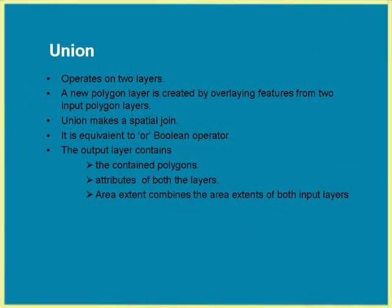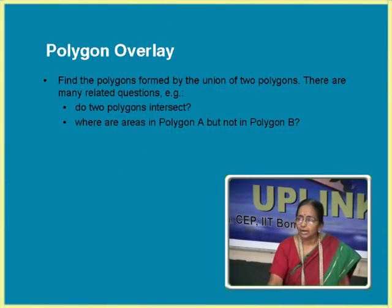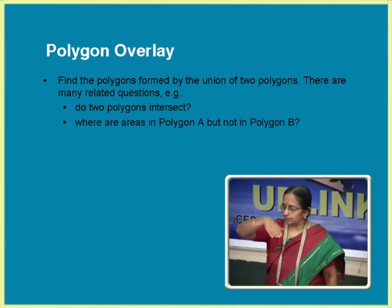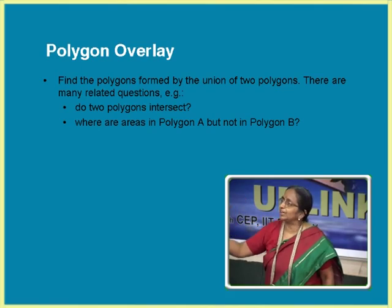Union is a very common operation whenever you have to combine more layers. It is a Boolean OR operation. When you have one polygon layer and another polygon layer, the system will overlay them and create the table. The complexity of what the system works through — it is an example where only two polygons are taken, one polygon in one layer, another in another layer, and they are overlaid.